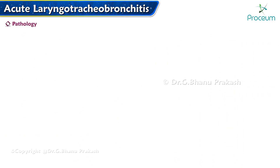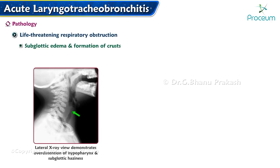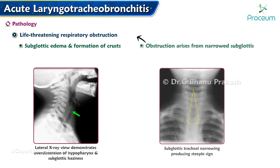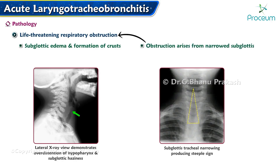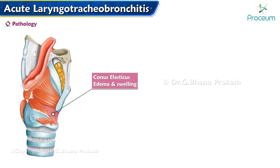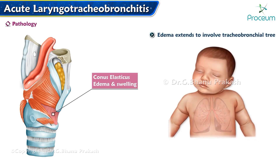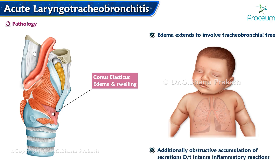Pathology: This condition can result in life-threatening respiratory obstruction owing to subglottic edema and the formation of crust. Obstruction arises from narrowed subglottis, where mucosal edema causes constriction in the subglottic area. The conus elasticus swells and becomes edematous, and edema extends to involve the tracheobronchial tree, with obstructive accumulation of secretions due to intensive inflammatory reactions.